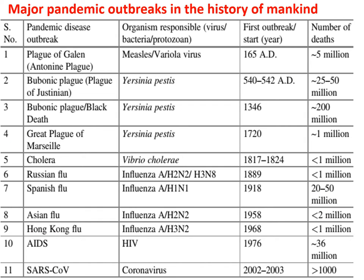Looking at major pandemic outbreaks in the history of mankind, there have been 11 major pandemics: plague, bubonic plague, the Great Plague of Marseille, cholera, Russian flu, Spanish flu, Asian flu, Hong Kong flu, AIDS, and SARS-CoV-2.